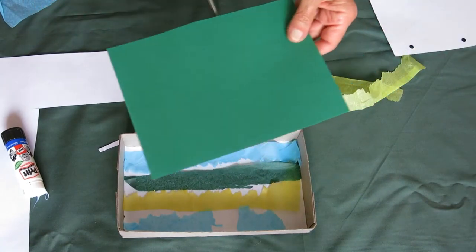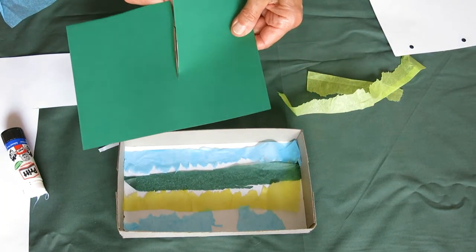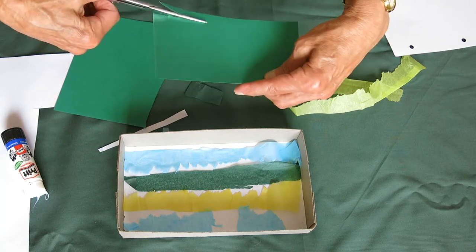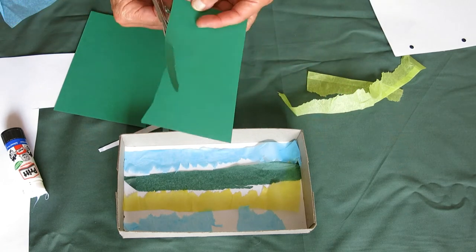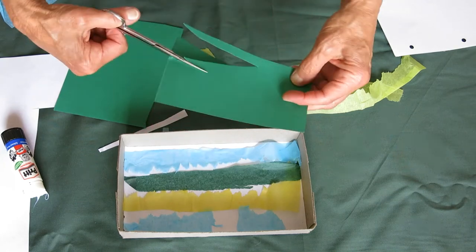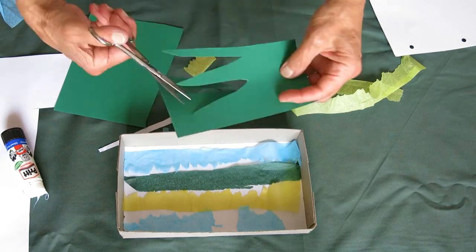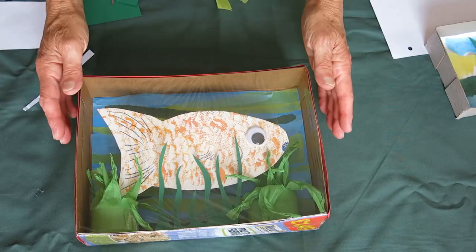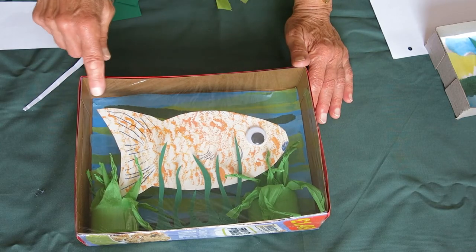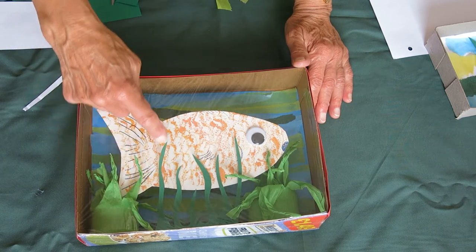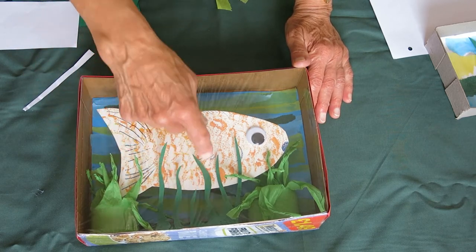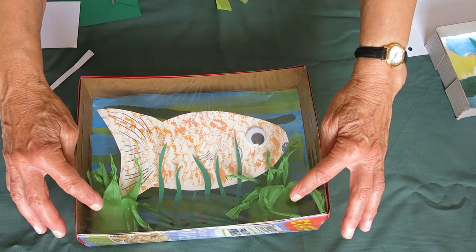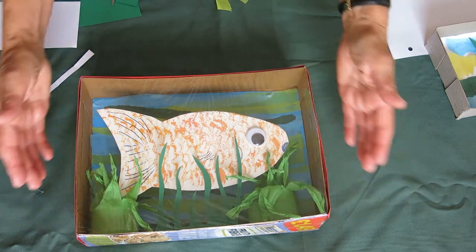You could cut some nice pieces of card to look like weeds or rushes. If you look at my finished one you can see the tissue background. You can see I put some of the green weeds at the front, but there's also these interesting weeds. I'm going to show you how to make those ones next.